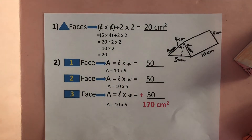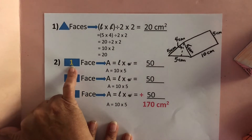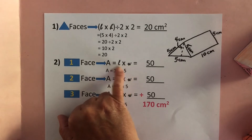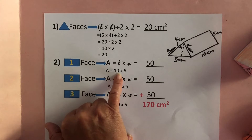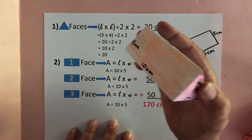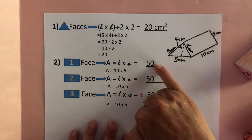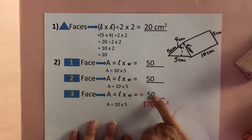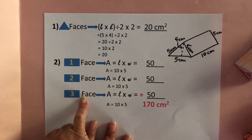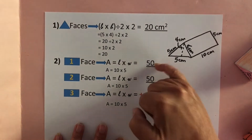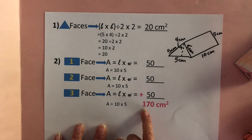Now all we have to do is find the area of the three rectangular faces. The formula is area equals length times width. Area equals 10 times 5, which is 50. All three rectangular faces — the blue, orange, and purple sides — are all exactly the same, each with an area of 50 square centimeters. Adding all the figures: 50 plus 50 plus 50 is 150, plus 20 more is 170 square centimeters.